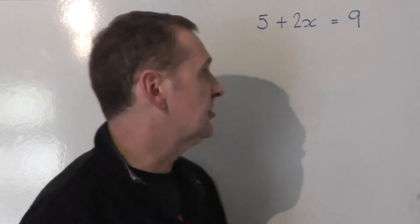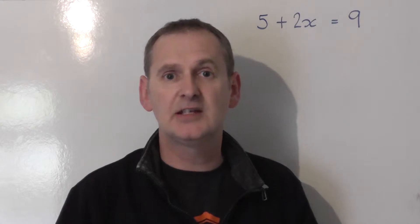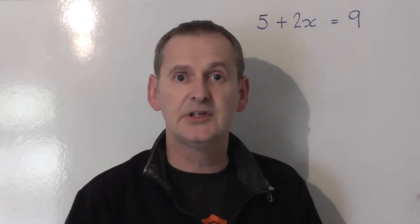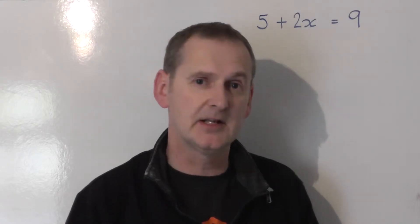2x is on the left-hand side of the equal sign. There's the equal sign, and they're on the left. So I'm going to leave the 2x exactly where it is on the left-hand side, and I'm going to collect the number terms, the 9 and the 5, on the other side, on the right-hand side.